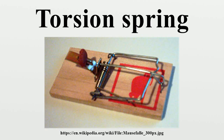In Coulomb's experiment, the torsion balance was an insulating rod with a metal-coated ball attached to one end, suspended by a silk thread. The ball was charged with a known charge of static electricity, and a second charged ball of the same polarity was brought near it. The two charged balls repelled one another, twisting the fiber through a certain angle, which could be read from a scale on the instrument. By knowing how much force it took to twist the fiber through a given angle, Coulomb was able to calculate the force between the balls for different charges and different separations, and he showed that it followed an inverse-square proportionality law, now known as Coulomb's law.